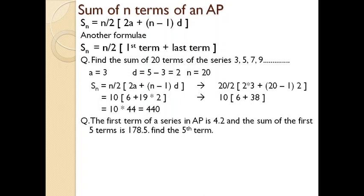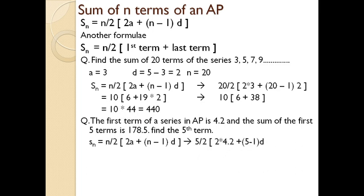Next case: the first term of a series in arithmetic progression is 4.2 and the sum of the first 5 terms is 178.5 — find the fifth term. Usually the first term or first few terms are given and you need to find the sum, but in this case the sum is already given along with the first term, and you need to find the fifth term. Substituting available values: S_n = (n/2) × [2a + (n−1)d] gives 178.5 = (5/2) × [2×4.2 + (5−1)×d].